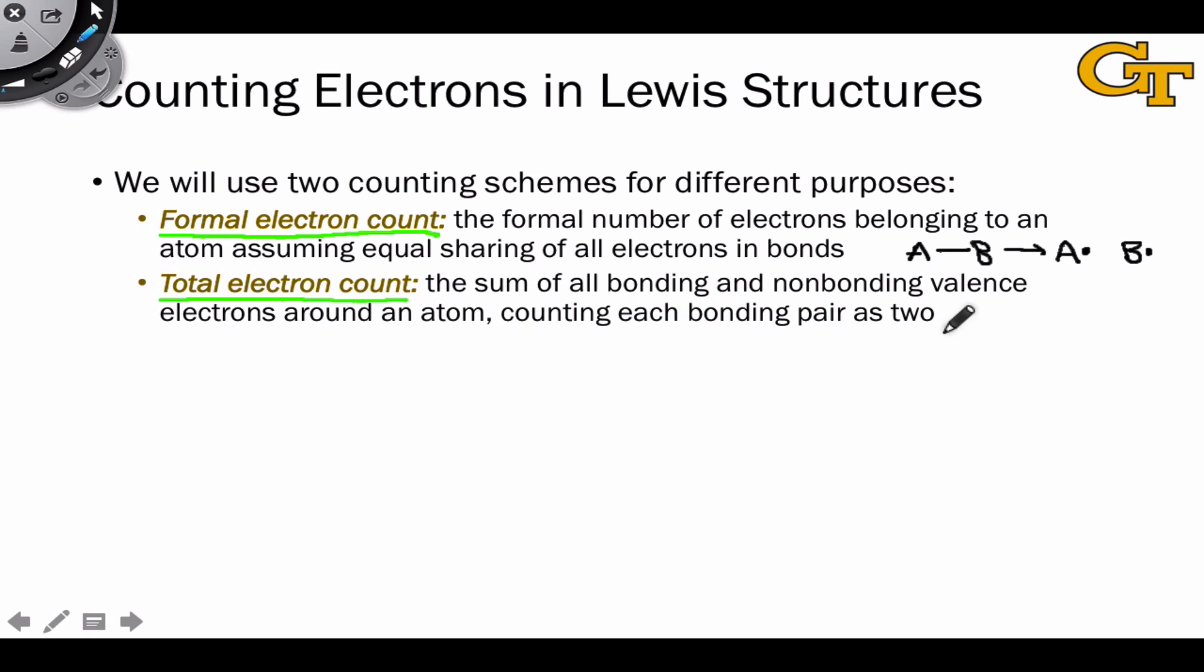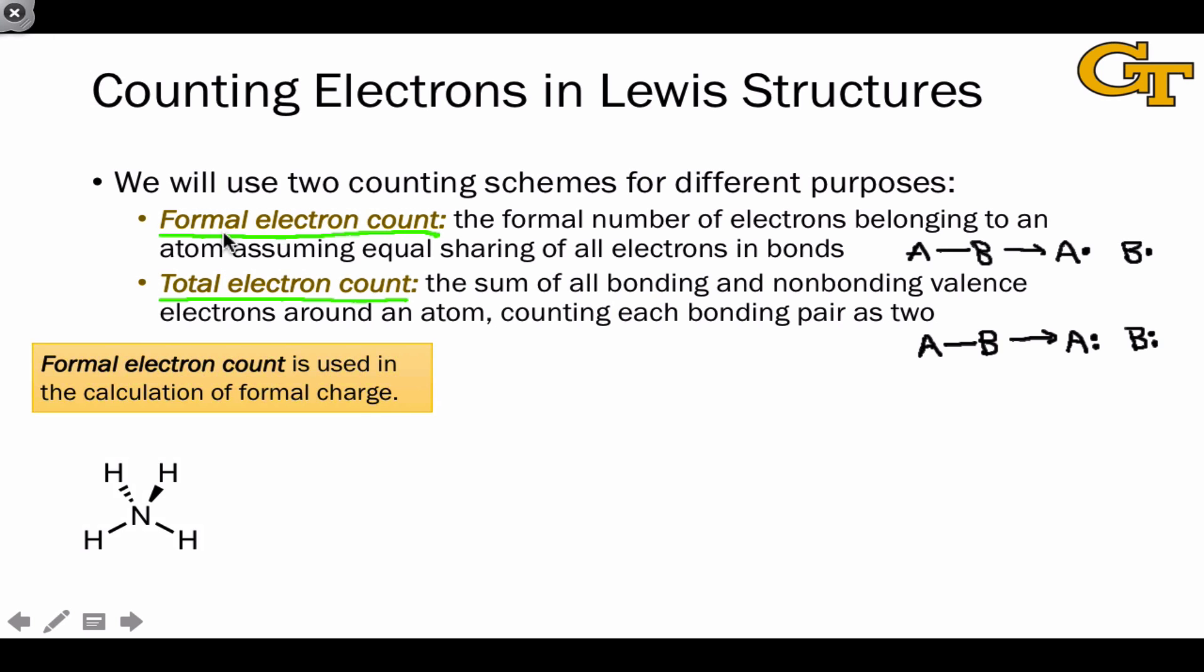To determine the total electron count around an atom, we actually count each pair of bonding electrons twice. So we take AB, and we imagine A has a pair of electrons, and B has a pair of electrons. Now, it seems like electrons have come out of thin air, but for the purposes of the octet rule, it's okay to double count electrons like this. So as an example.